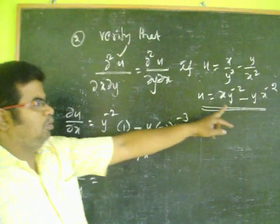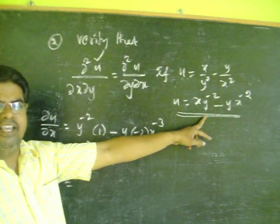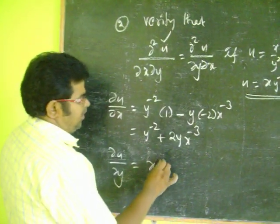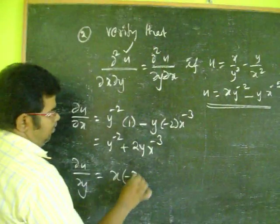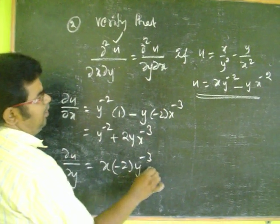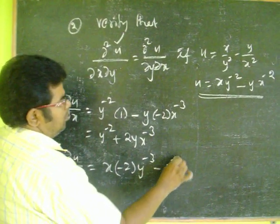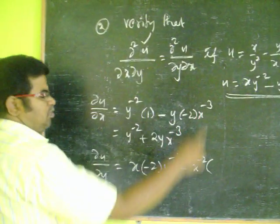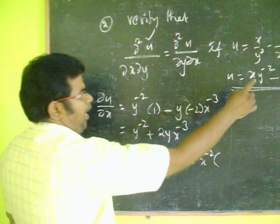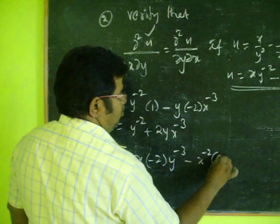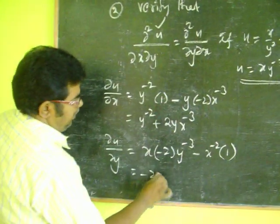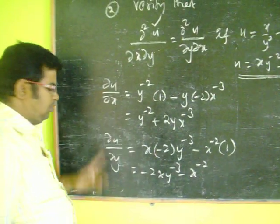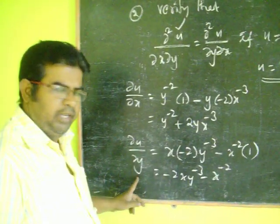Next, find ∂u/∂y. The derivative with respect to y treats x as a constant. Therefore, the derivative of y⁻² is minus 2·y⁻³, and x⁻² is a constant so the derivative of y with respect to y is 1. So ∂u/∂y = minus 2x·y⁻³ minus x⁻².